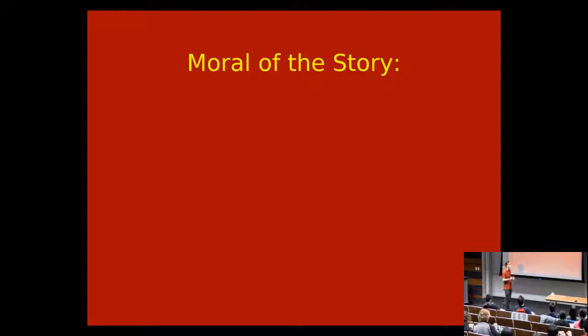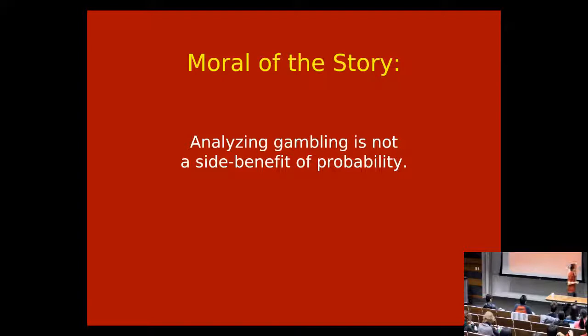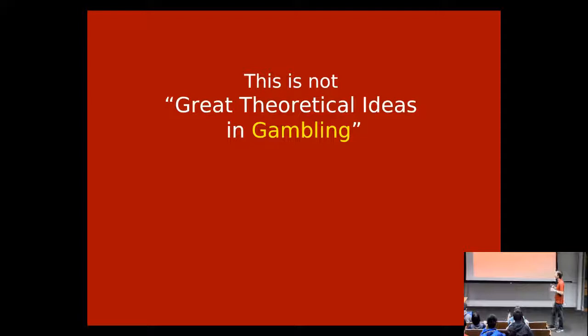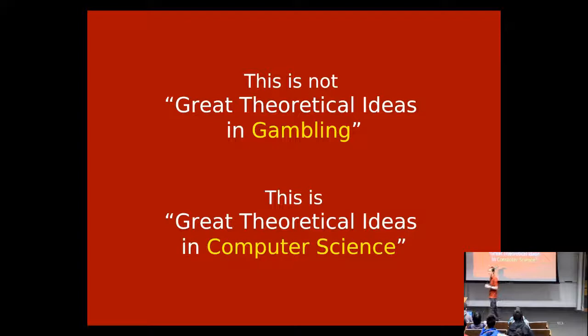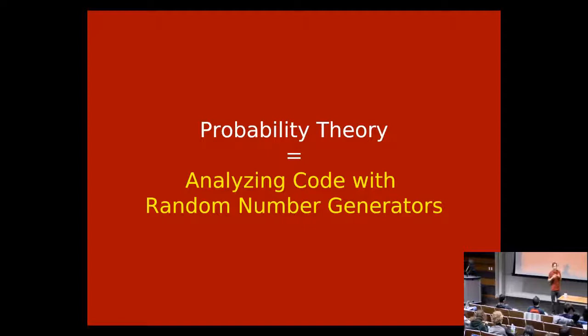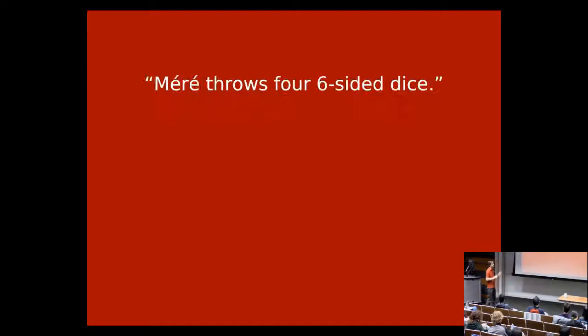Usually when you learn probability in class, you learn formulas and apply them to try to help win at poker or something. But it's not like analyzing gambling is a side benefit of probability — it's actually the whole original motivation. However, this class is called Great Theoretical Ideas in Computer Science, not gambling. I'd like to tell you a computer science perspective on probability. Probability theory should really be thought of as the mathematics of analyzing computer code or programs that have random number generator calls in them.